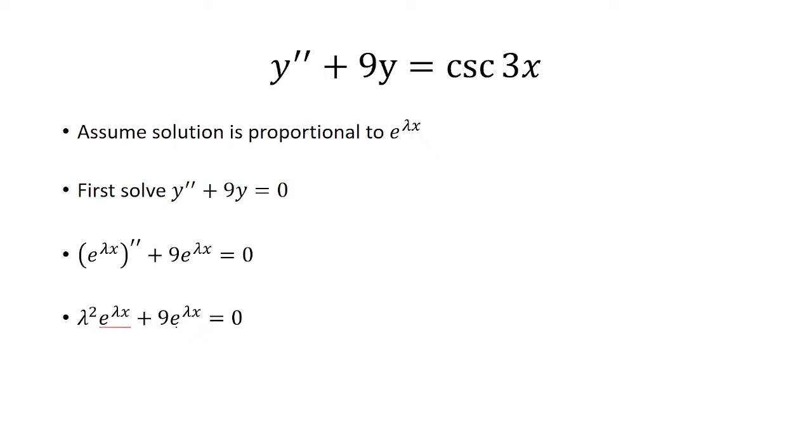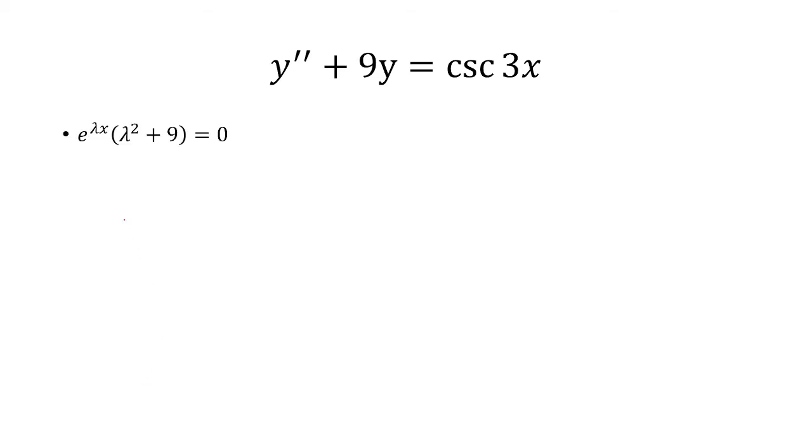Both terms have an e^(λx), so let's factor that out. We're left with λ² plus 9. We know e^(λx) is never equal to 0, so we can divide both sides by that. We're left with λ² plus 9 equals 0.